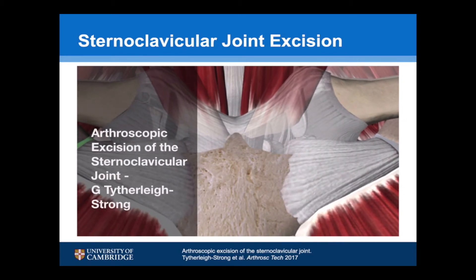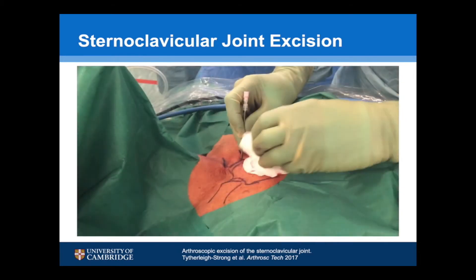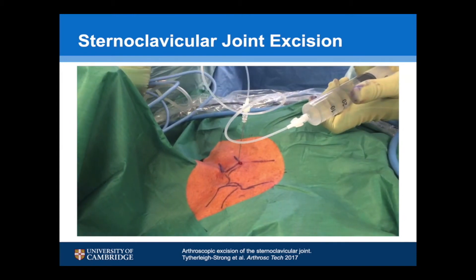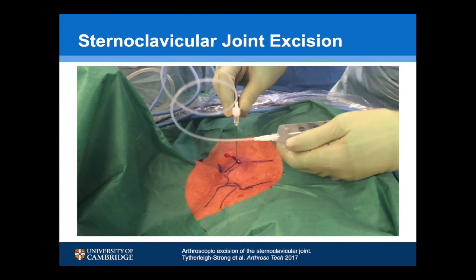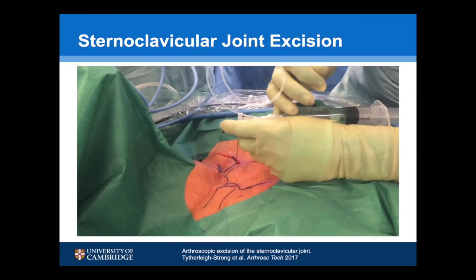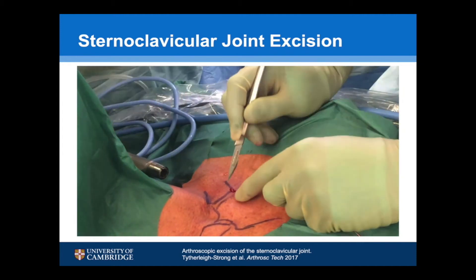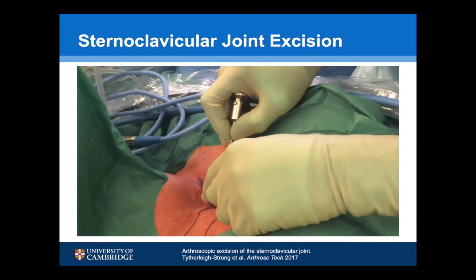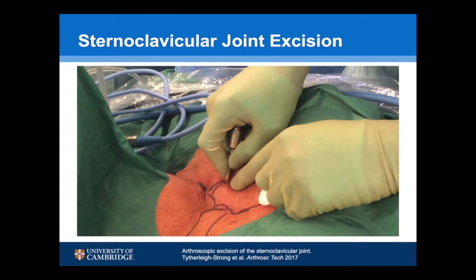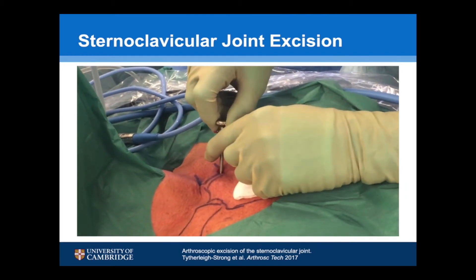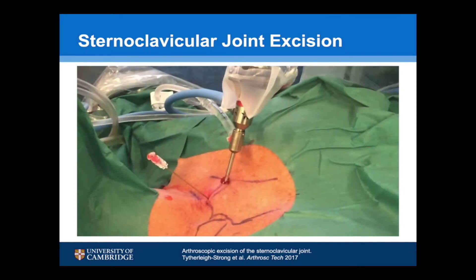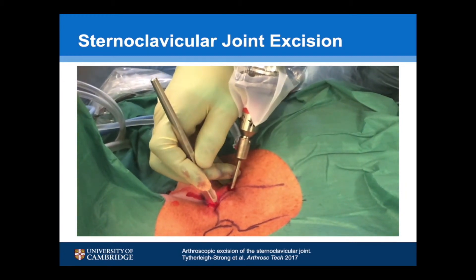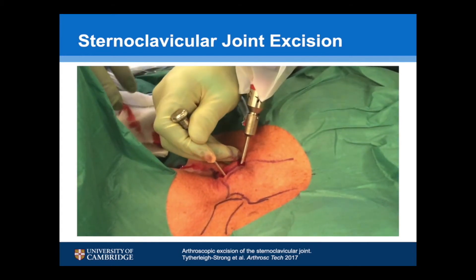This is a video of a 45-year-old lady who developed left sternoclavicular joint pain after an innocuous injury, probably due to pre-existing osteoarthritis. The inferior portal has been established using a spinal needle and about 5 mls of fluid has been insufflated into the joint. We can see there's just a little flashback so we know we're in the joint. Having done that, we establish our inferior portal — a 5 mm incision taken down onto the capsule. The trocar is inserted with a definite pop as it goes in. We then put the scope in, and once we've got a clear view, we use a spinal needle to establish the superior portal.